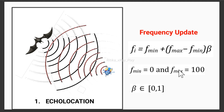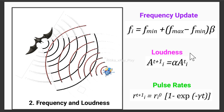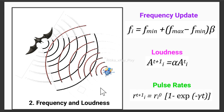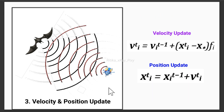The key concepts used in the Bat Algorithm include echolocation — bats emit sound waves that bounce back after hitting an object. By analyzing the time delay and frequency of the returning echoes, bats can determine the location and size of prey. Next, we have frequency and loudness: each bat represents a potential solution, and bats adjust their frequency and loudness as they search for the optimal solution. The loudness decreases as a bat gets closer to the target, and the pulse emission rate increases.